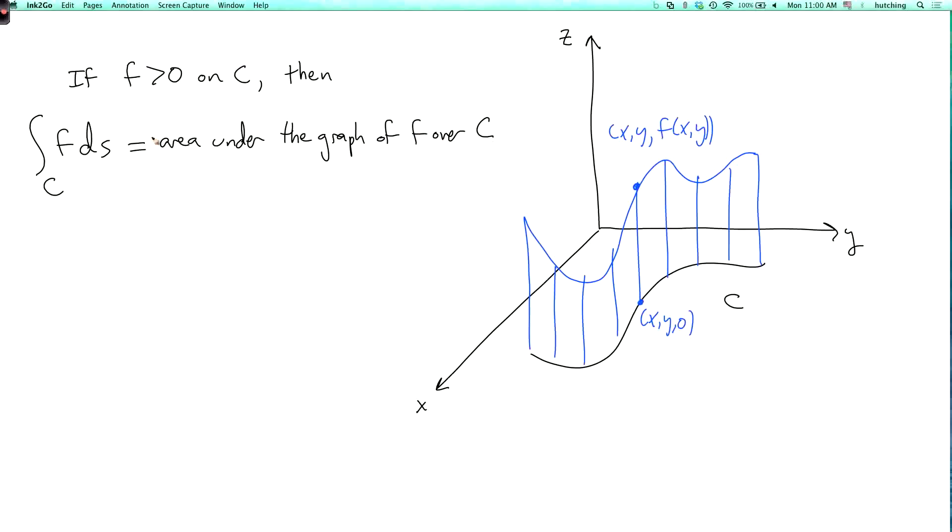I mean, if you think about the definition, let me just write this again. So the definition was that the integral over c of f ds is the limit as n goes to infinity of sum from i equals 1 to n of f of r of ti star delta si.